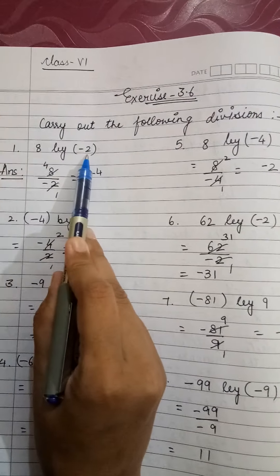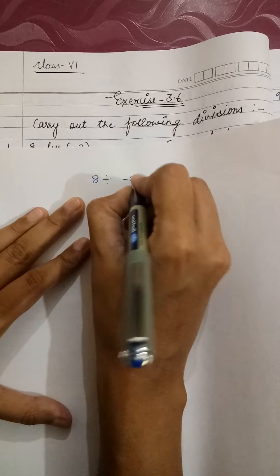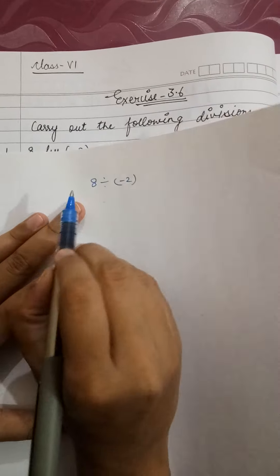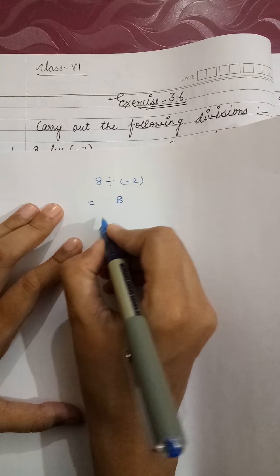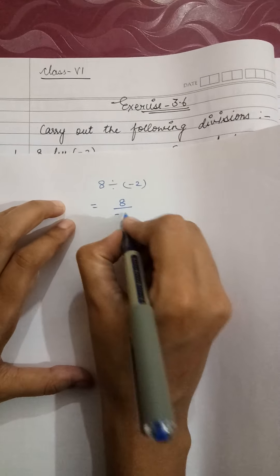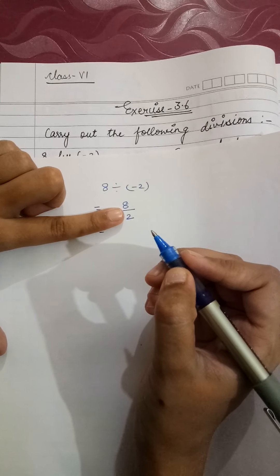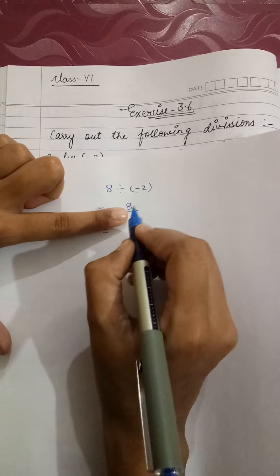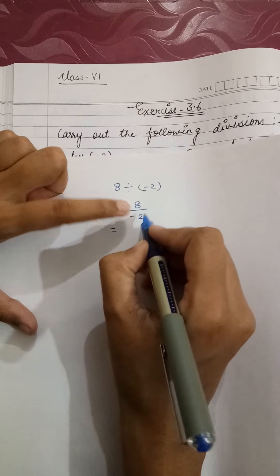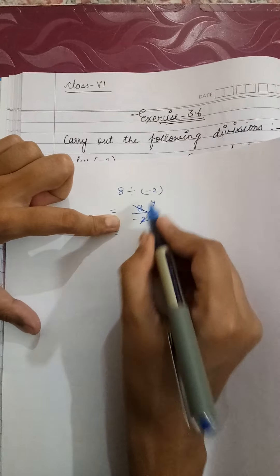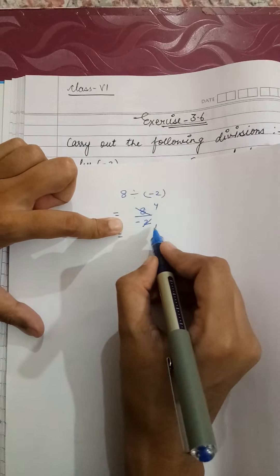Now 8 you have to divide by minus 2. Simply what you are going to do here is 8 divided by minus 2. Two signs cannot be together, so I have put here the bracket. Now I am going to write here 8, I have to divide this 8 by minus 2. Without looking at the sign, just cancel this, keep it in the simplest form. It will cancel as 2 ones and this will go on 4 because 2 fours are 8. Now the answer is 4 upon 1 but with the minus sign.